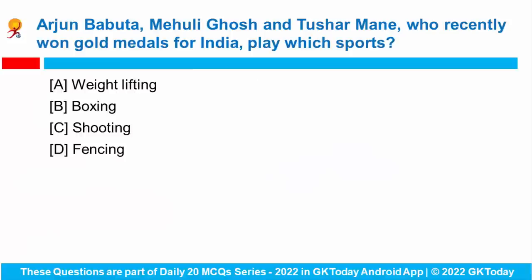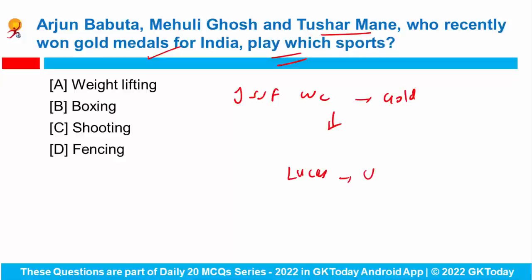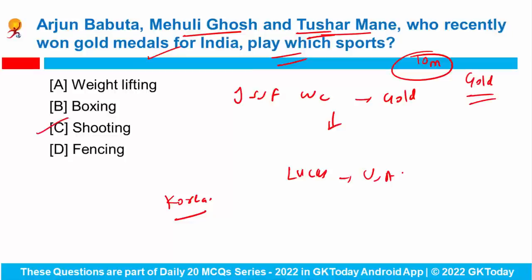Arjun Babuta, Meholi Ghosh, and Tushar Mani recently won gold medals for India — they play shooting. Arjun Babuta won his first ISSF World Cup Stage gold by beating Tokyo Olympic silver medalist Lucas from USA. This championship is being held in Korea. Meholi Ghosh and Tushar Mani won the 10-meter air rifle mixed team gold at this World Cup.